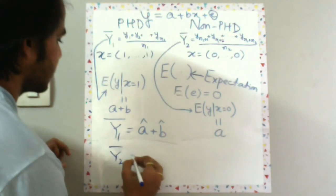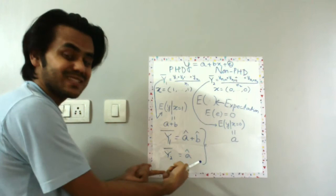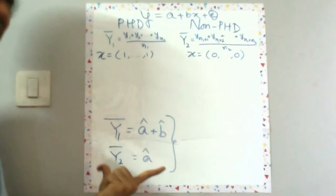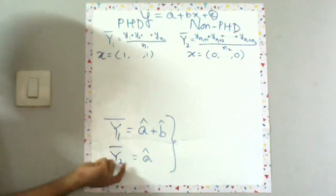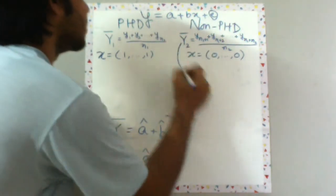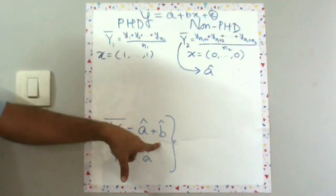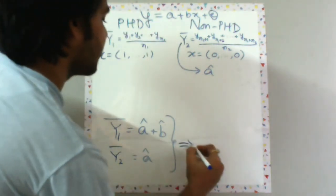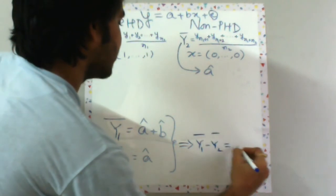Now that we have simple linear equations, we can solve them to get the values of a hat and b hat. A hat is already quite visible here, a hat is Y2 bar. So this guy over here is your a hat, and this guy is a hat plus b hat. If you subtract this minus this, you would get Y1 bar minus Y2 bar is equal to b hat. So now you have a hat as well as b hat.